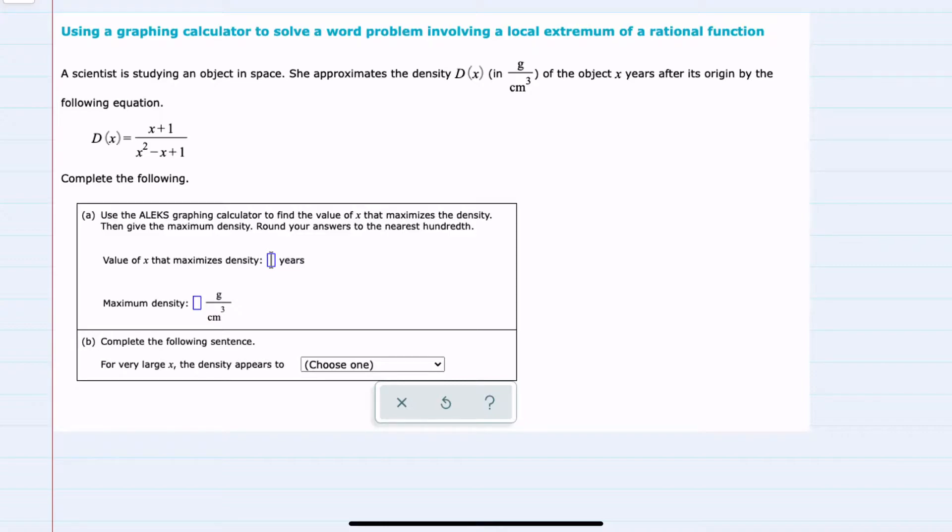We're told here that a scientist is studying an object in space, and she has this density function, d of x, that gives the object's density in grams per centimeter cubed x years after its origin. So we're given the density function. We're inputting years, and the output is density. And we're asked a couple of questions.